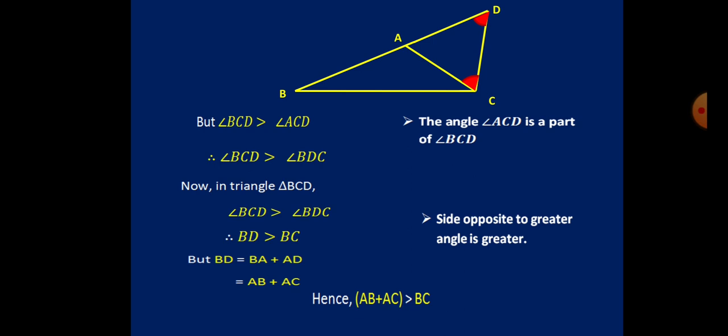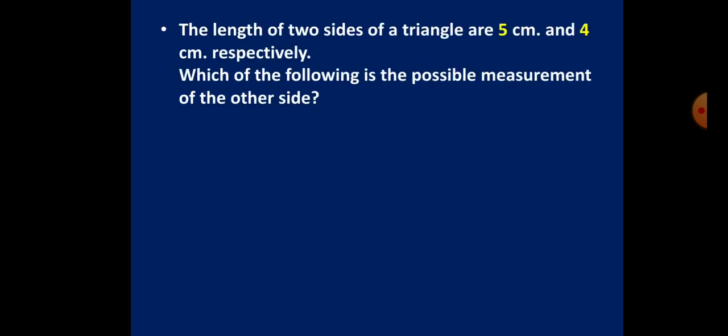When you are done, let us start again. Here is a problem: the lengths of two sides of a triangle are 5 centimeters and 4 centimeters respectively. Which of the following is the possible measurement of the other side — 1 cm, 4 cm, 9 cm, or 10 cm? This question seems easy but is actually tricky.